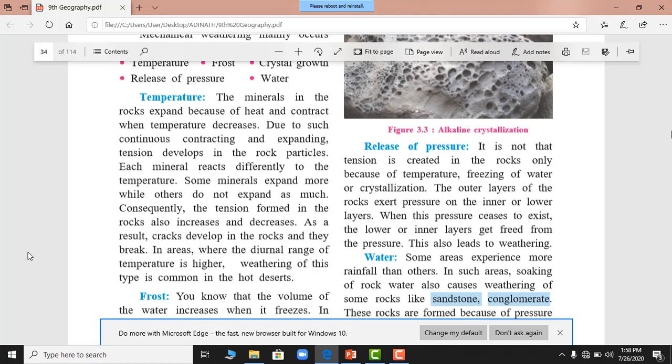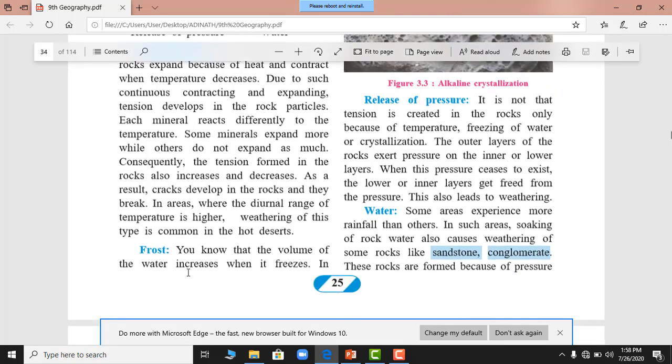These cracks develop in the rocks and they break so this is the outer surface exfoliate, remove. In areas where the diurnal range of temperature is higher weathering of this type is common. This type is common in the hot desert generally in the hot areas where the diurnal temperature means the desert area is very high in the day. The temperature is very high. In the night it will decline 50 percent. The difference in the night it will be below 20 degrees. So this happens in this area in the hot region.